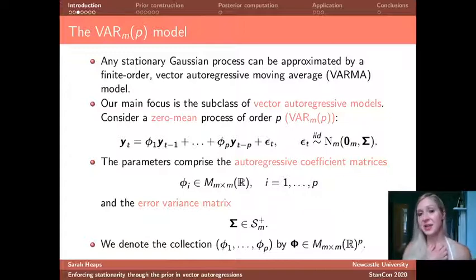So fortunately any stationary Gaussian process can be approximated to an arbitrary degree of accuracy by a finite order vector autoregressive moving average or VARMA model. In this talk I'm going to focus on a subclass of that larger class called the vector autoregressive models. So to set this up, a vector autoregressive model of order P would be or could be expressed as I've indicated here. So what we do is we write the n-variate observation vector at time t as a linear combination of the P preceding terms plus some error epsilon here, and these errors are an IID sequence of multivariate normal random vectors with zero mean.